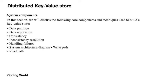Let's consider the system components while designing the key-value store. In this section we will discuss the following core components and techniques: data partitioning, data replication, consistency, inconsistency resolution, handling failures, system architecture, write path, and read path. These are the main components we focus on while designing the key-value store.